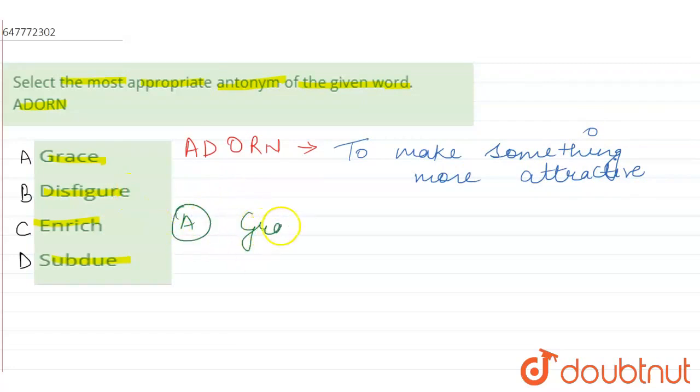A option is first, grace. Grace means an attractive quality, which you can see and like. So A option grace is not the opposite.